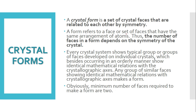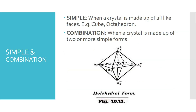A form refers to a face or a set of faces that have the same arrangement of atoms — they are similar faces. The number of faces in a form depends on the symmetry of the crystal. Every crystal system shows typical groups of faces developed on individual crystals, which show identical mathematical relationships with the crystallographic axes. Minimum two faces are required to make a form.